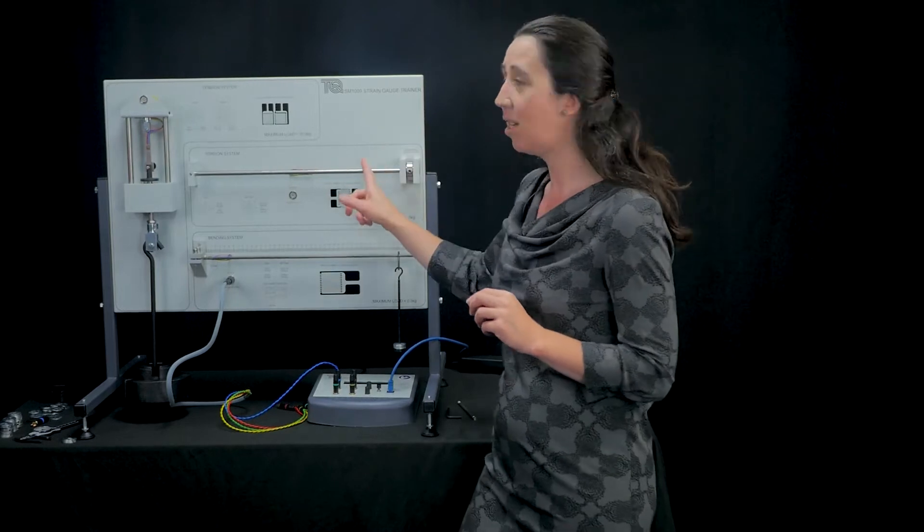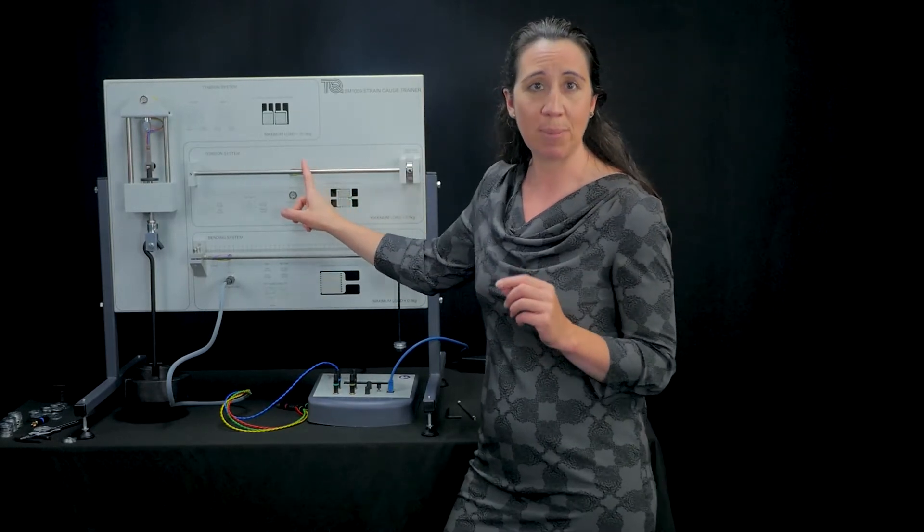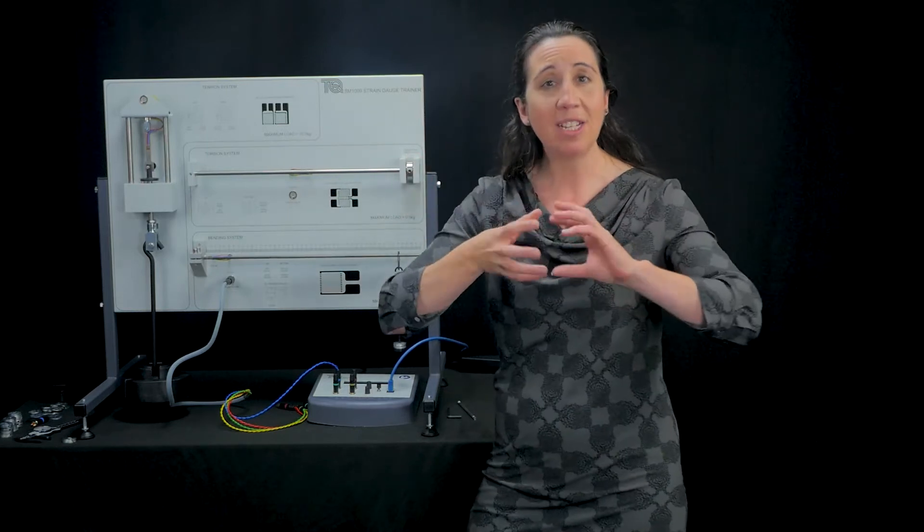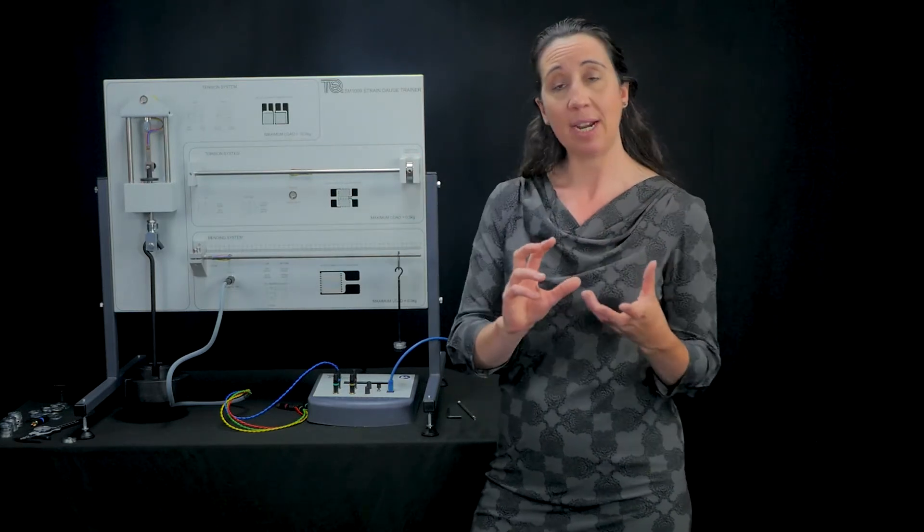It consists of a solid circular section torsion beam, which is a bar held by two fixings that can be rotated or twisted independently of each other.